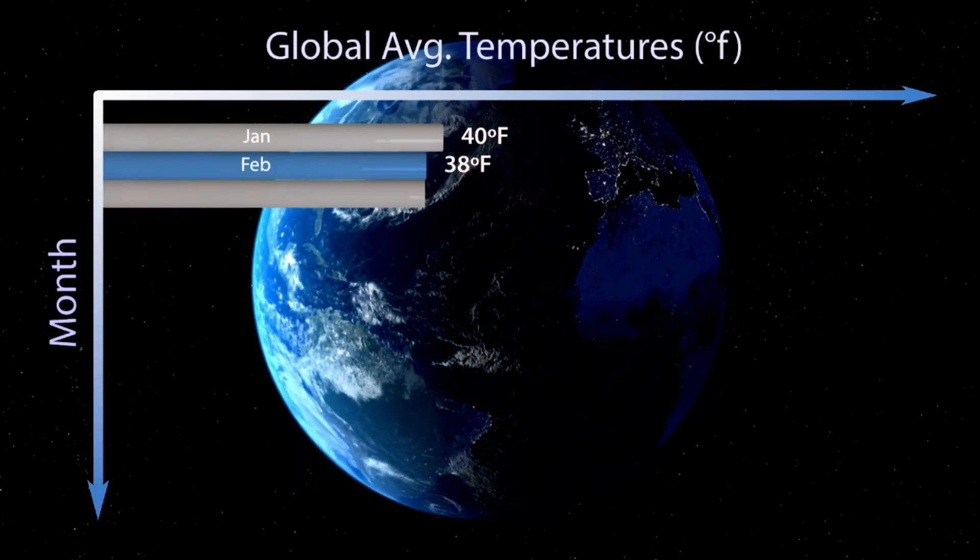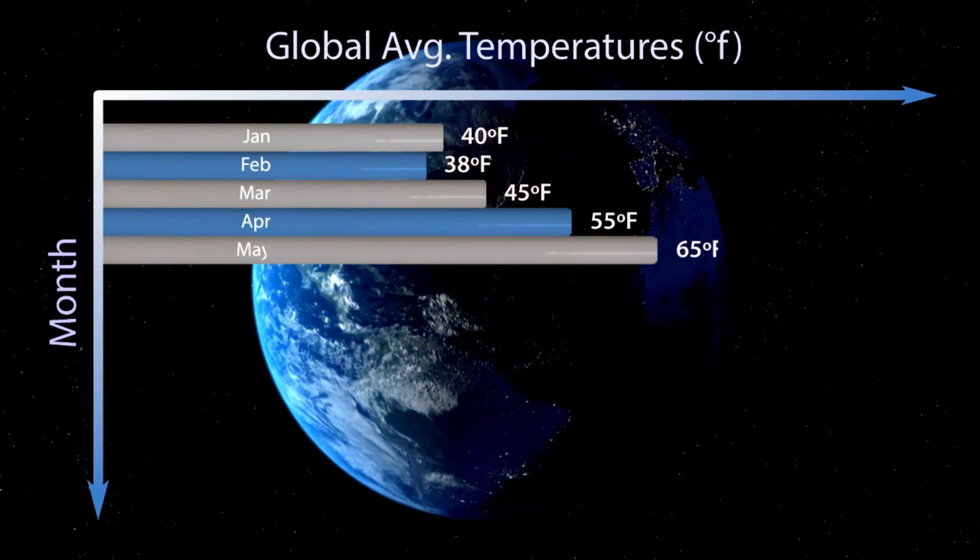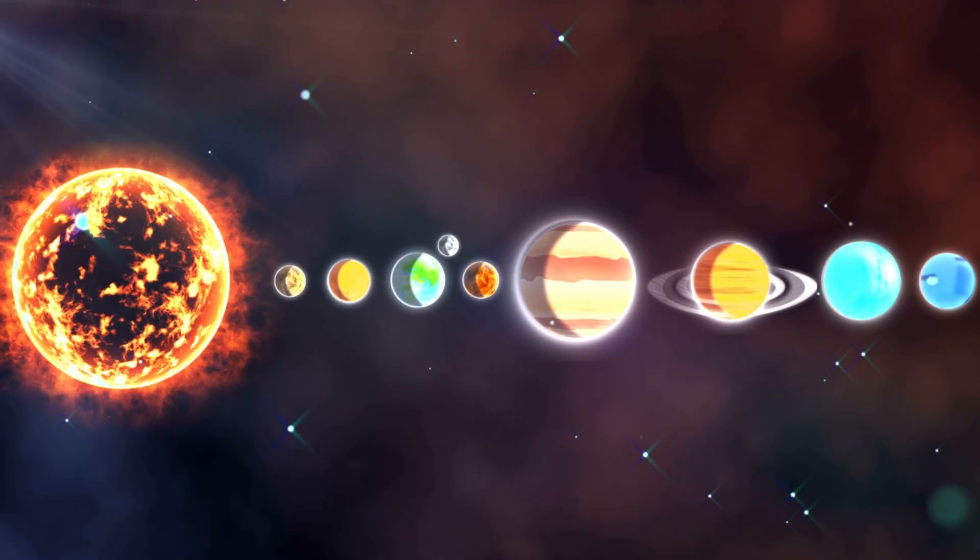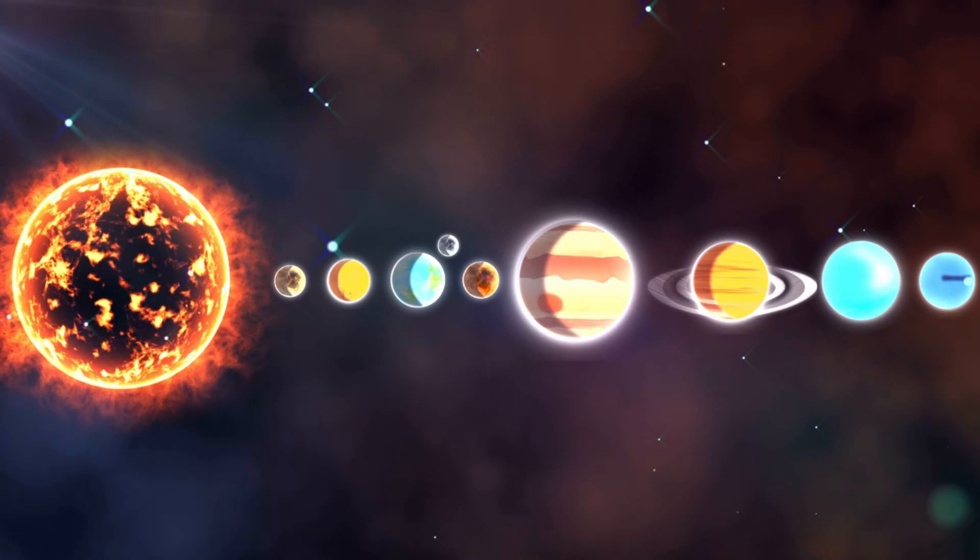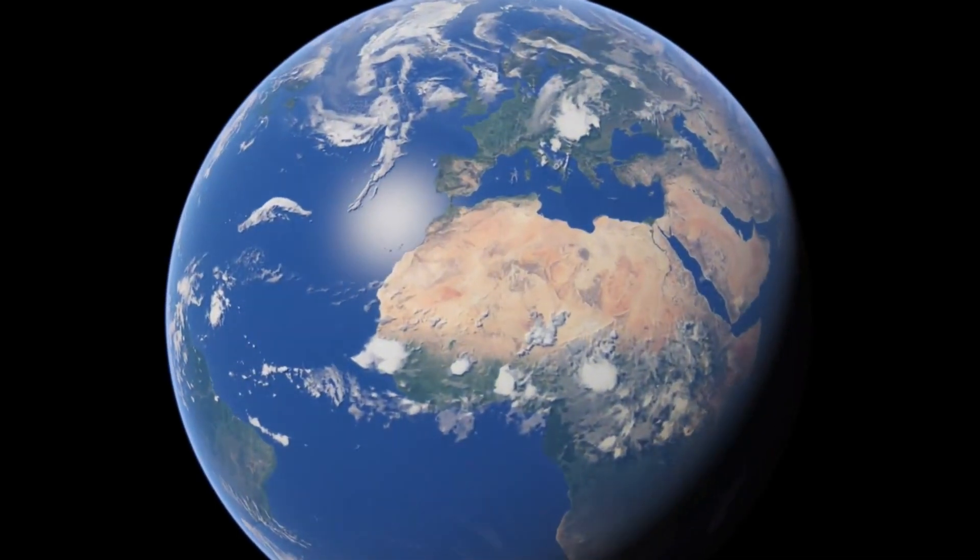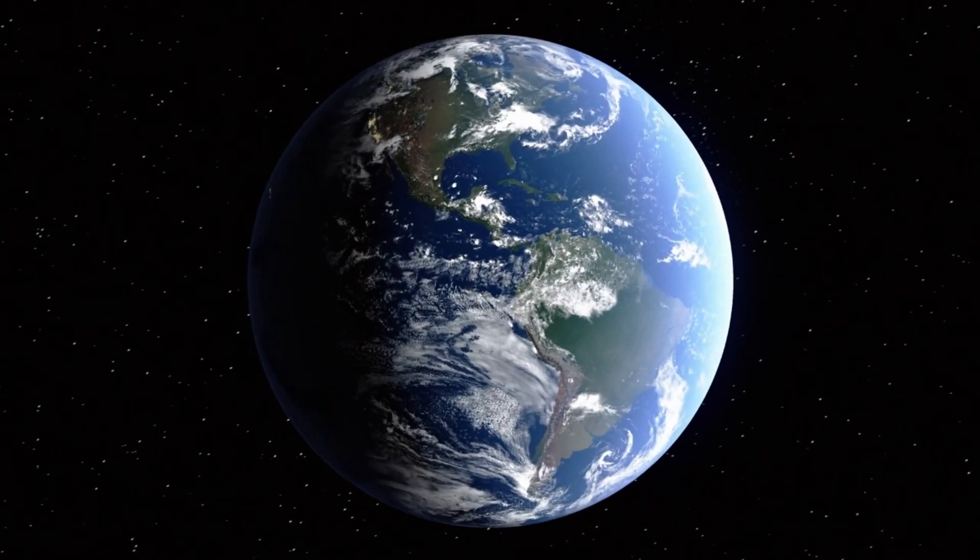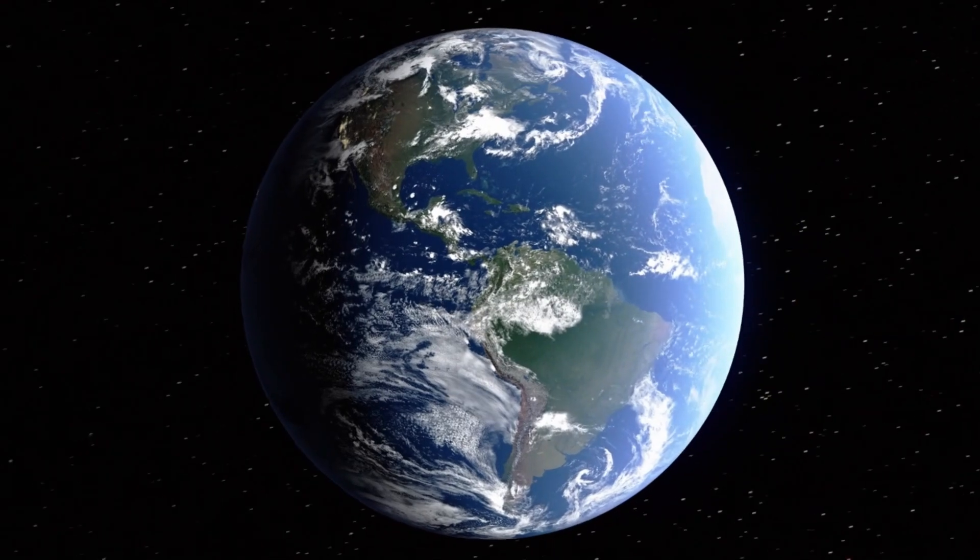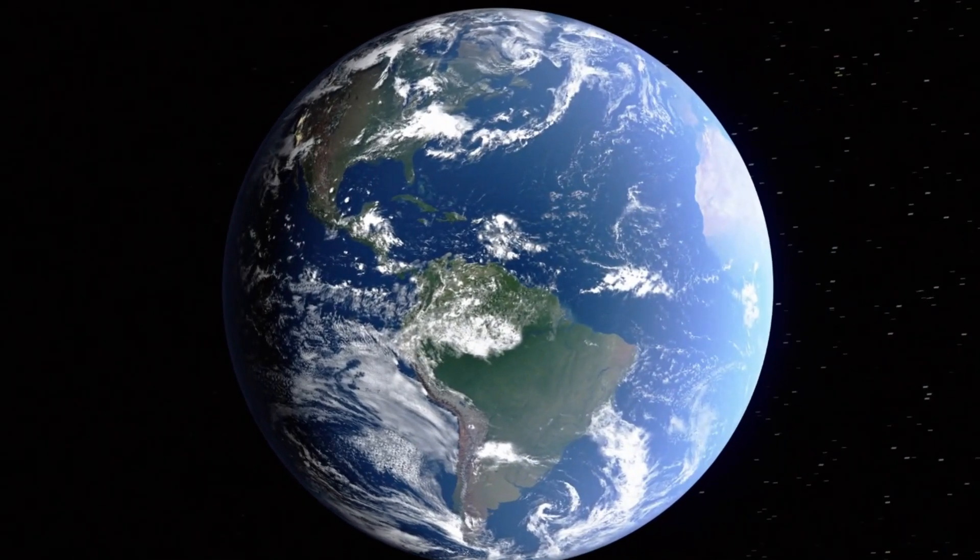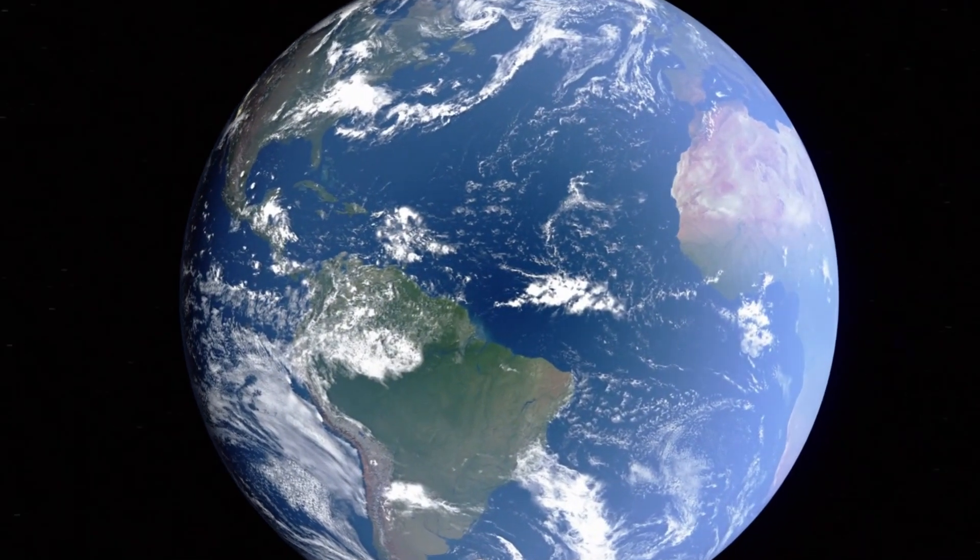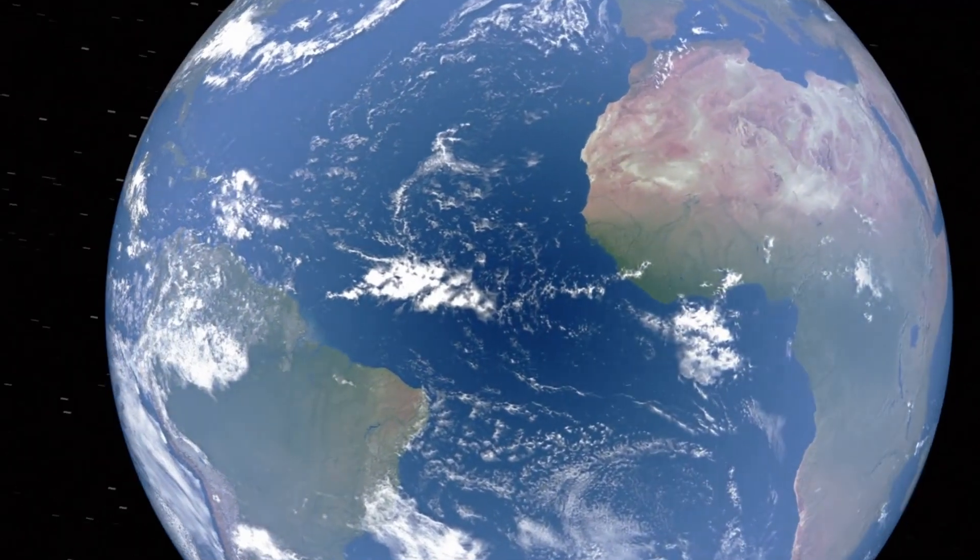Super-Earths are a class of planets that are more massive than Earth yet lighter than ice giants like Neptune and Uranus. They are truly one of a kind. They can be made up of gas, rock, or even a combination of both, and their sizes can vary from twice the size of Earth all the way to ten times its mass. They really put the super in Super-Earth, huh?